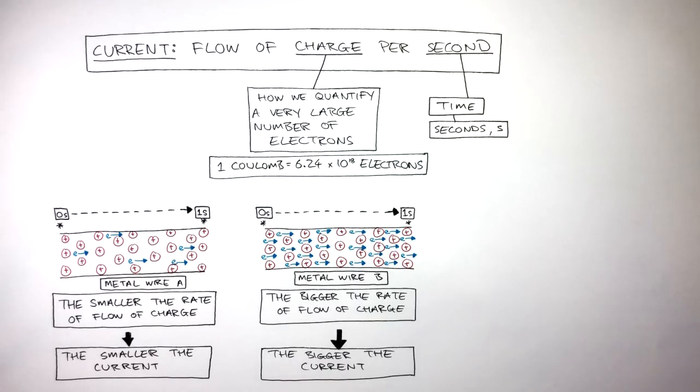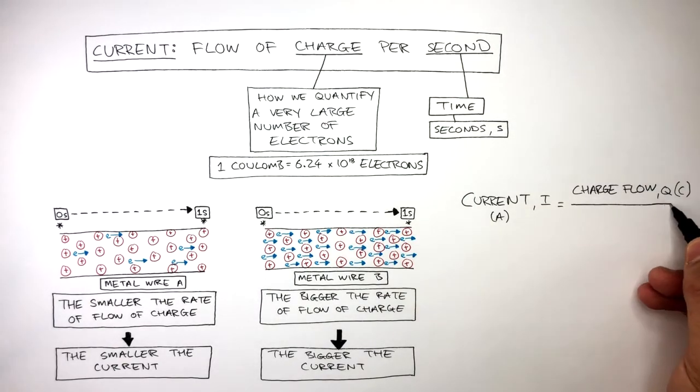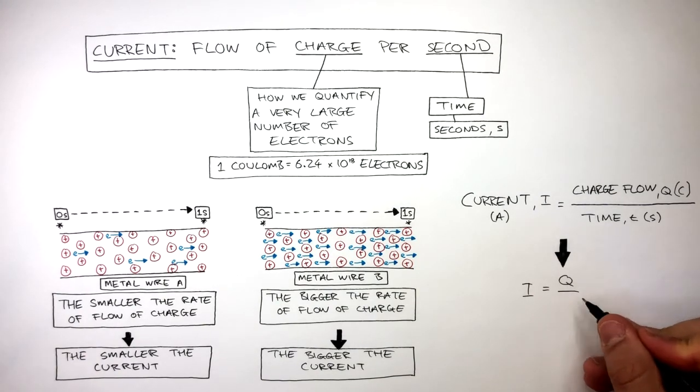The equation to calculate current is current equals charge flow divided by time. The symbol of current is a capital I, and the unit of current is a capital A for amps. The symbol for charge is a capital Q, and the unit is a capital C for Coulomb. The symbol for time is a lowercase t, and the unit is a lowercase s for seconds. This equation can be simplified to I equals Q over T.